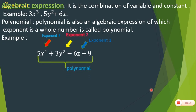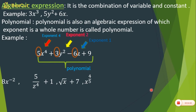Let's look at examples that are NOT polynomials. Consider: 8x raised to the power minus 2 — minus 2 is not a whole number. 5 upon z to the power 4 can be written as 5z to the power minus 4 — also not a whole number. Root x means x to the power 1 by 2 — not a whole number. And x to the power 4 by 5 — also not a whole number. Therefore all these are not polynomials, because minus 2, minus 4, 1/2, and 4/5 are not whole numbers.